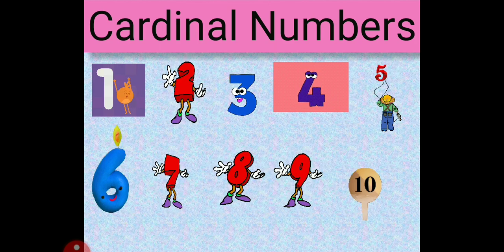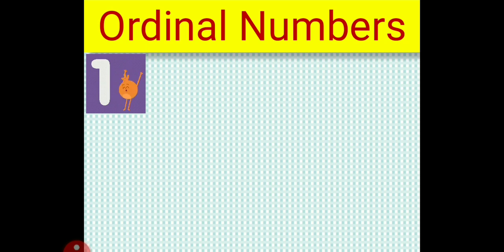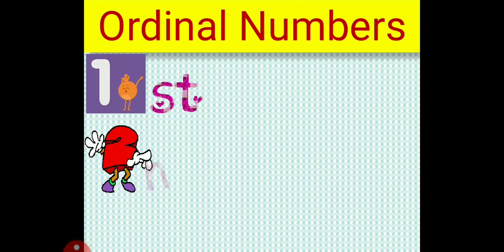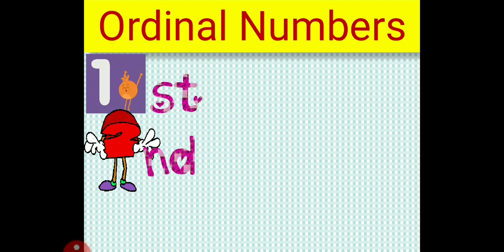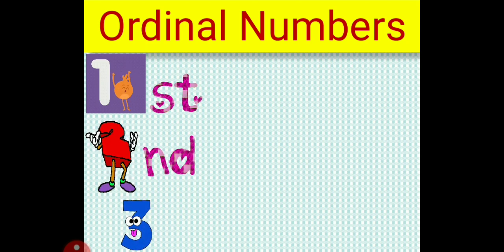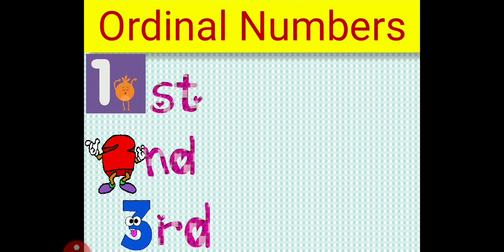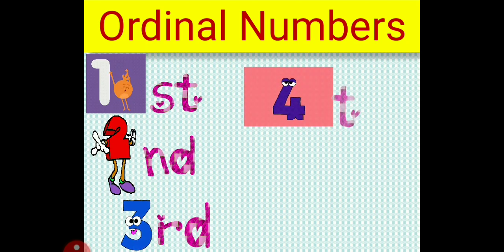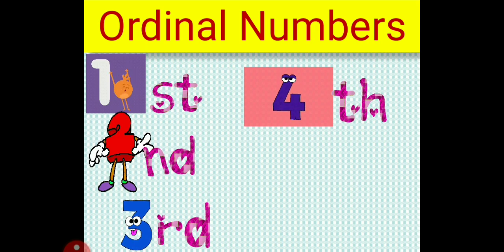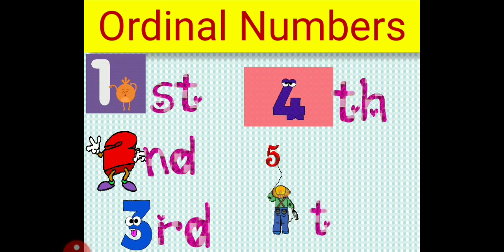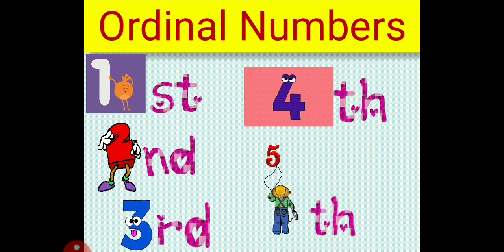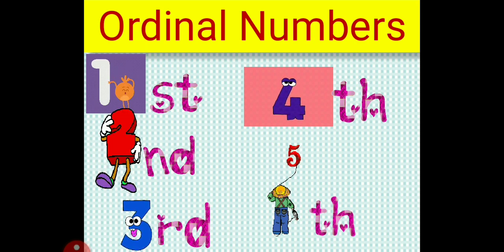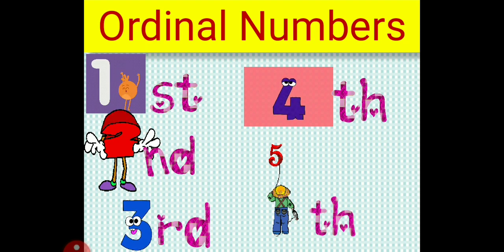Let's see how ordinal numbers are different from cardinal numbers. Again you can see 1 here, but with 1, S and T will come and it will become 1st. And now 2 is coming — with 2, N and D will join and this will become 2nd. Now say 3 — with 3, R and D will join and it will become 3rd. Next is 4 — T and H are joining so it will become 4th. Next is 5 — TH will join and this will become 5th. So this is how we read ordinal numbers. Again, repeat with me: 1st, 2nd, 3rd, 4th, 5th.